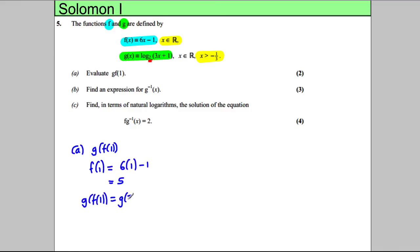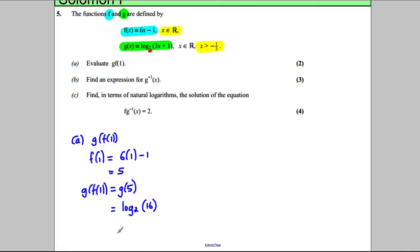Therefore g of f of 1 is going to be g of 5, which is log base 2 of 3 times 5 is 15, 15 and 1 is 16. Now you should know log base 2 of 16. This is 2 to what power gives you 16, and the answer is 4 because 2 to the power of 4 is equal to 16. So g of f of 1 is equal to 4.